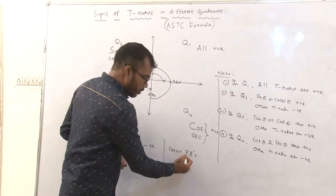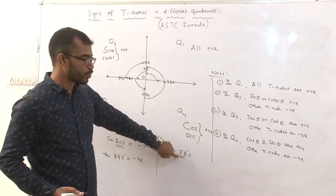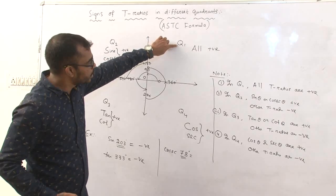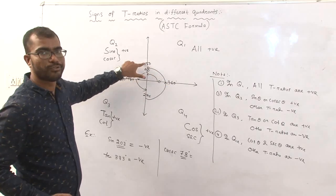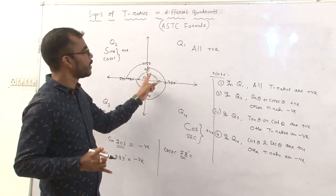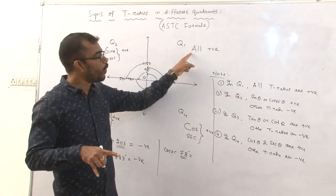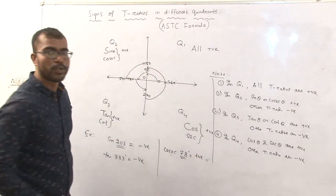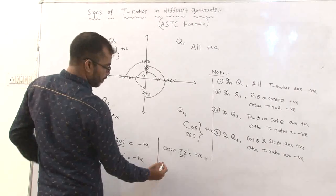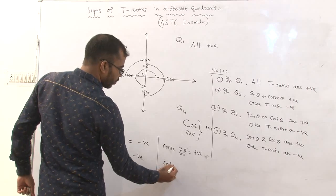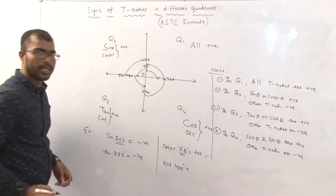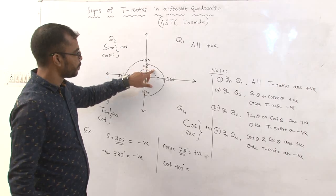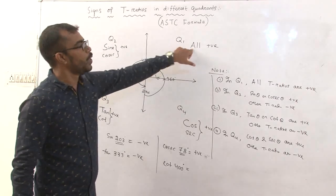Now suppose the angle is 7080°. We need to determine which quadrant 7080° lies in. Since 7080° lies between 360° to 450° range equivalents, it falls in the first quadrant. In the first quadrant all t-ratios are positive, so it is a positive angle. Similarly, cot 400°: 400° lies in the first quadrant, so cot 400° is also a positive angle.